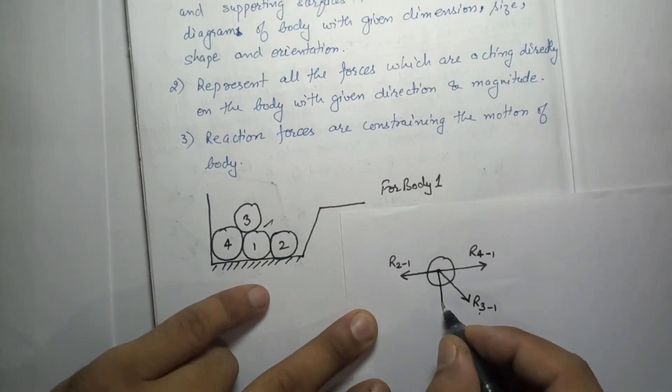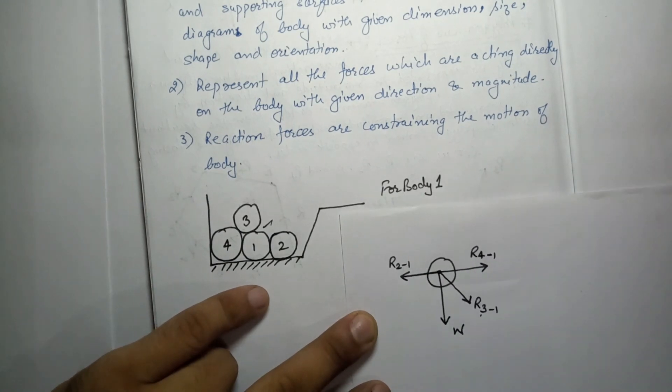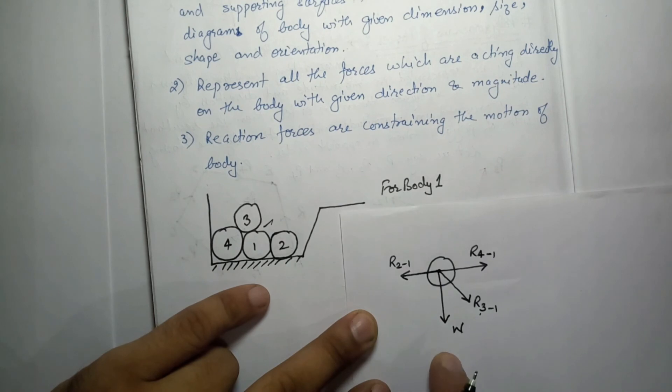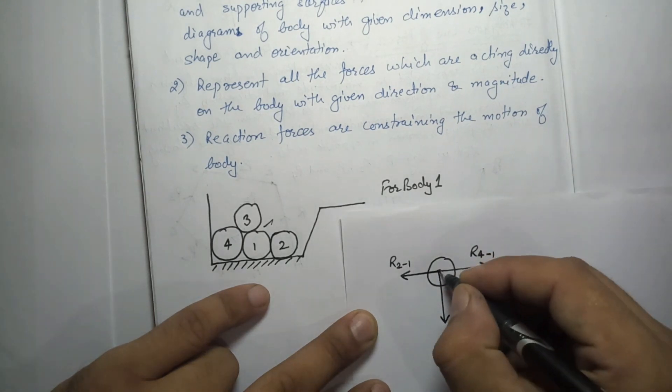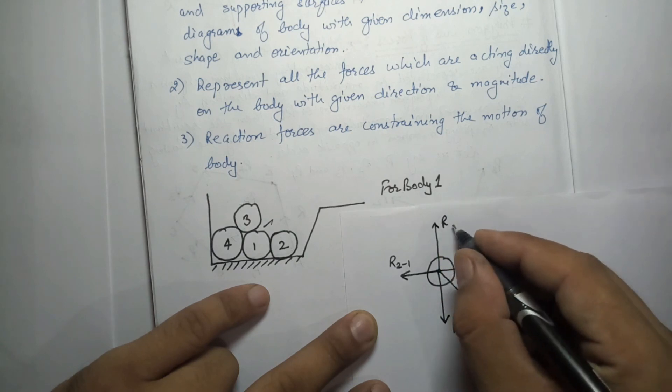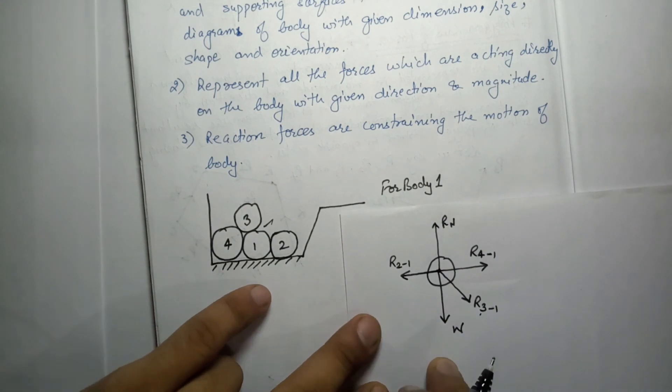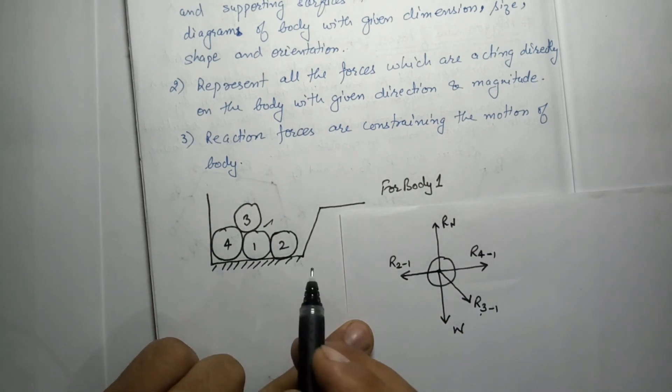Body 1 will also have a weight and it will be in the downward direction always. And due to this weight there will be a normal reaction in the upward direction. Right, so this is known as the free body diagram for body 1. Similarly, we can draw this free body diagram for bodies 2, 3, and 4 separately.